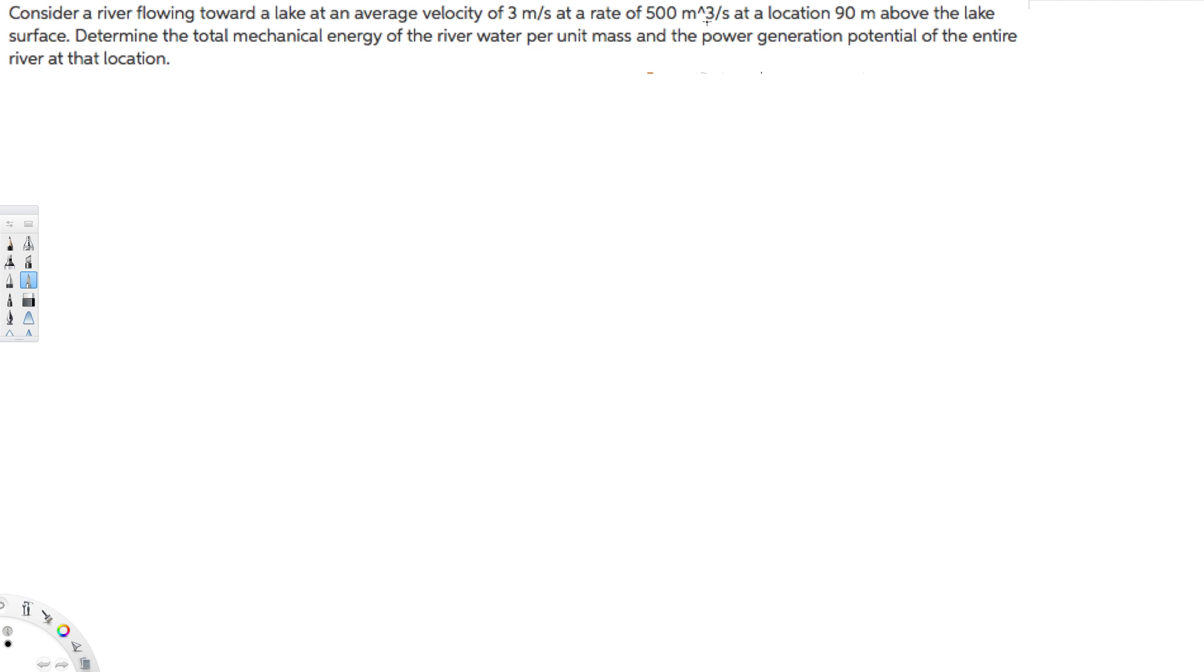This is volume flow rate, at a rate of 500 meter cube per second at a location 90 meter above the lake surface. Determine the total mechanical energy of the river water per unit mass and power generation potential of entire river at the location. So let's begin with the mechanical energy.